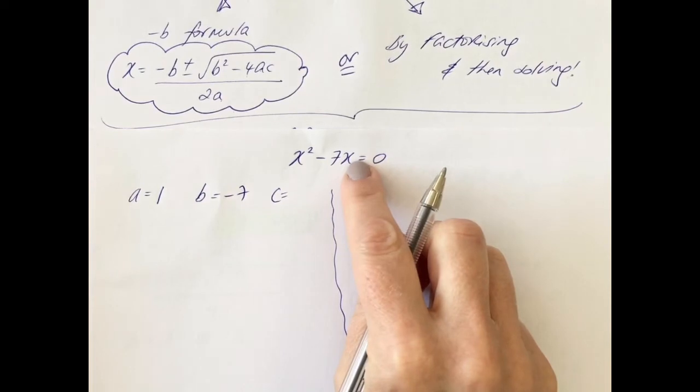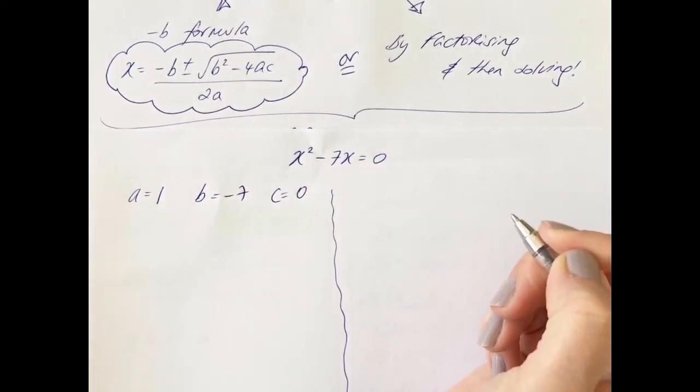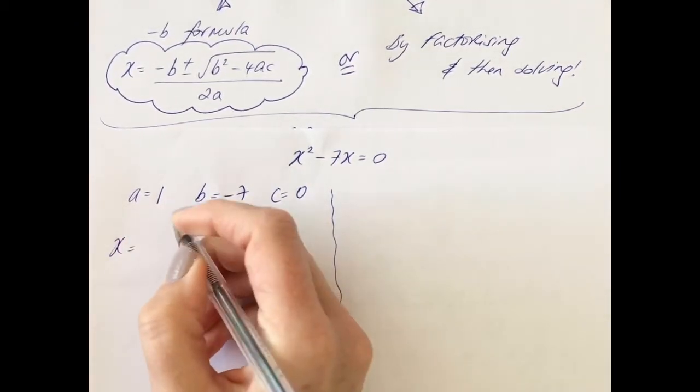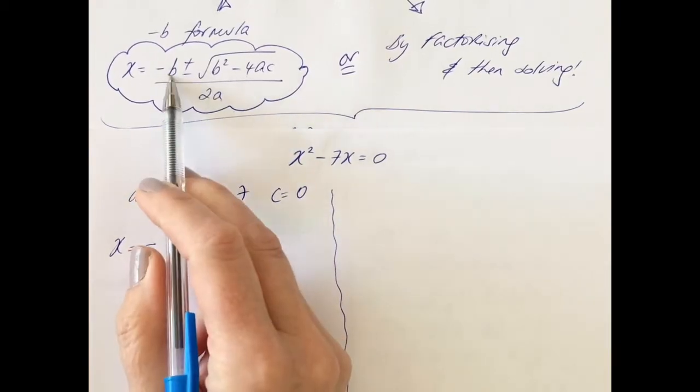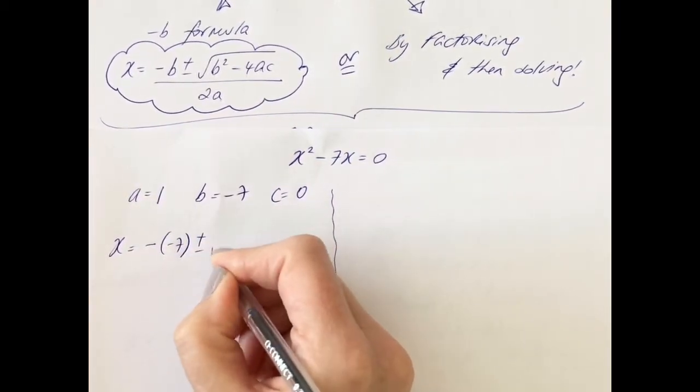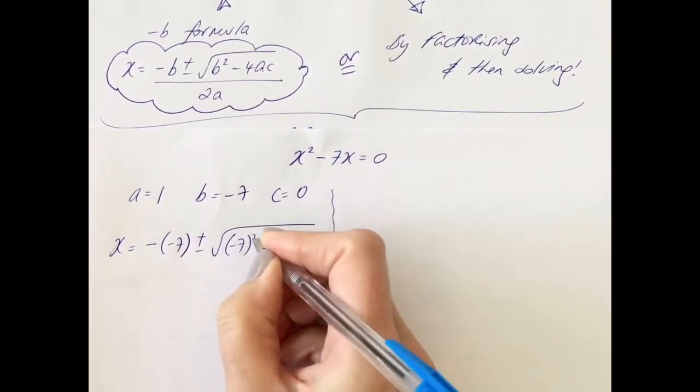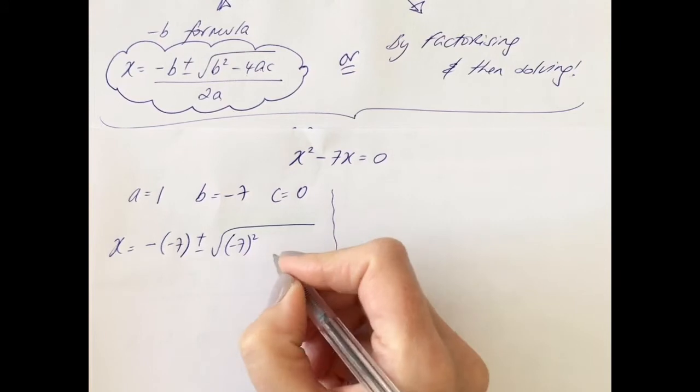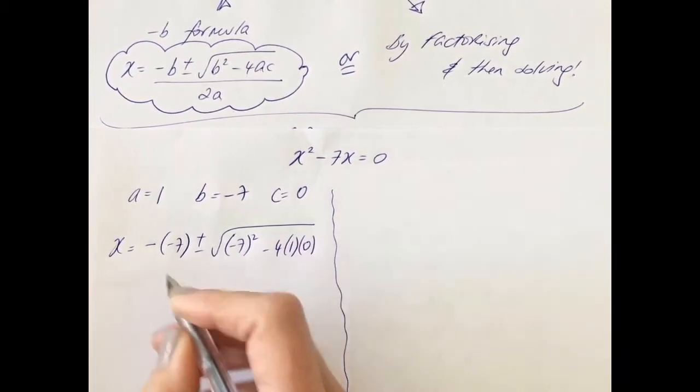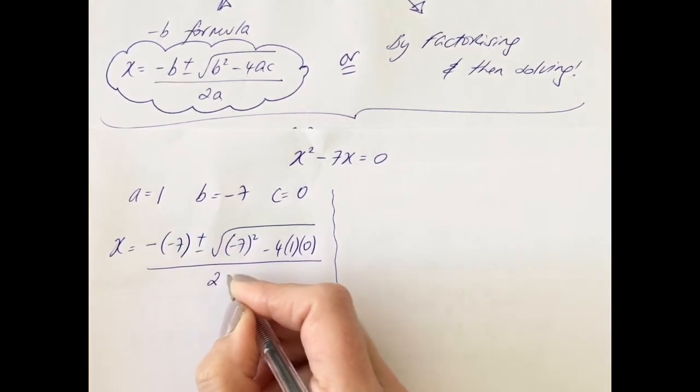And c is always the last number. Now there's no last number here which implies that c is zero. So using the minus b formula we have x equals minus b, which is minus seven, keep brackets around it, plus or minus the square root of b squared, which is minus seven squared, so brackets around it again, minus four a is one, put brackets around it, and c is zero, and again put brackets around it, all over two times a which is two times one.